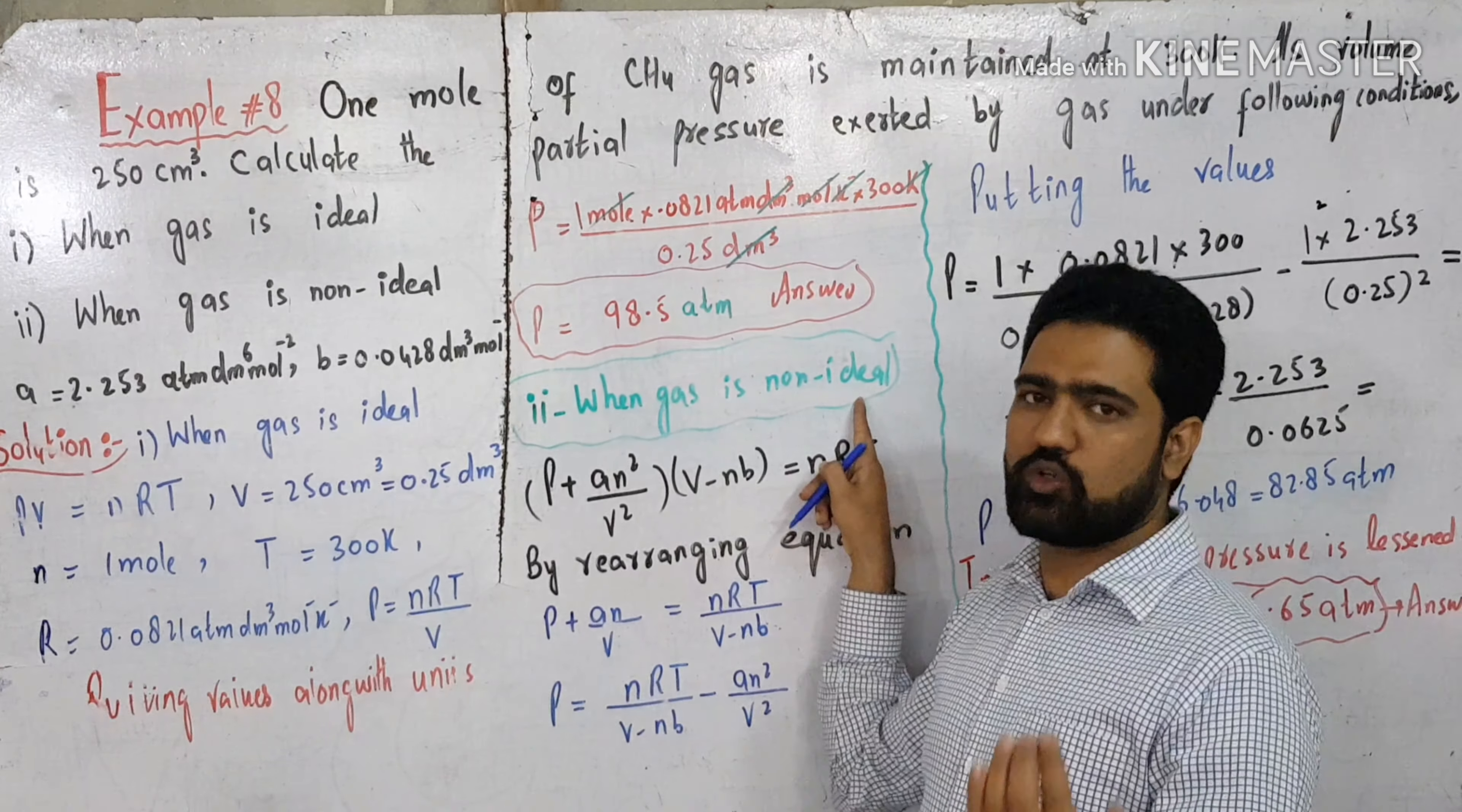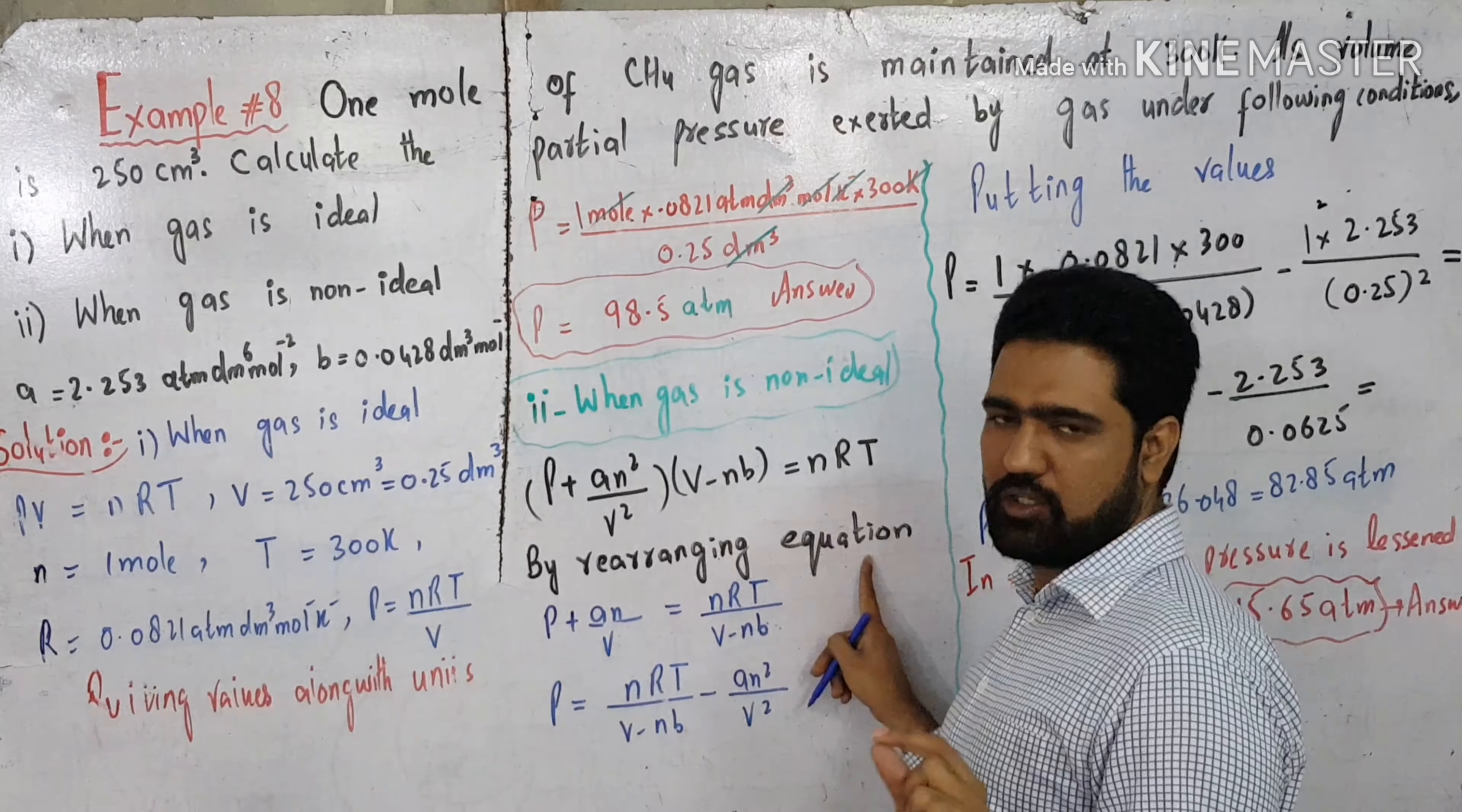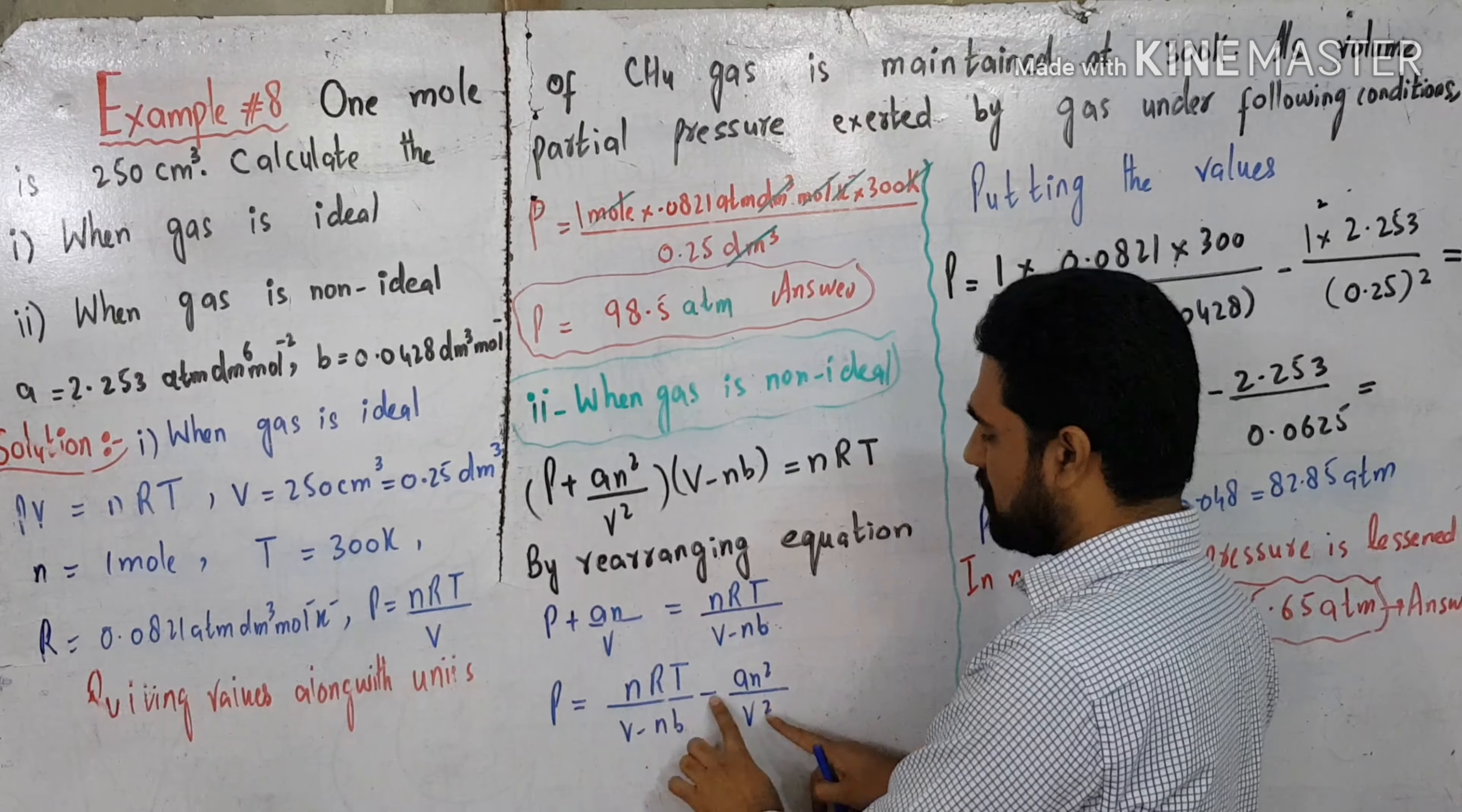If gas is non-ideal, van der Waals equation: (P + n²A/V²)(V - nB) = nRT. By rearranging equation to calculate the pressure, divide both sides. P equals nRT over (V - nB).